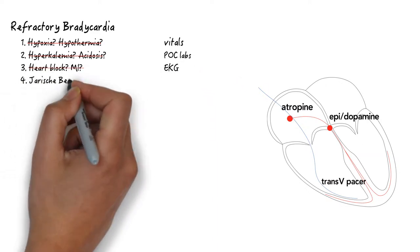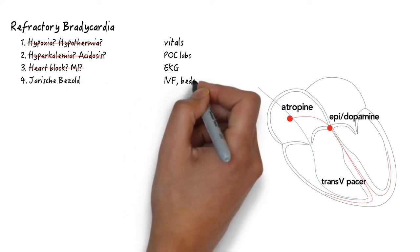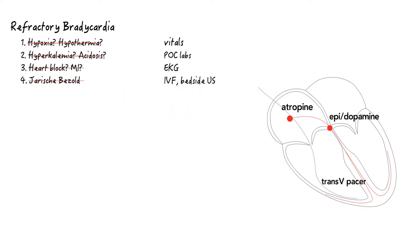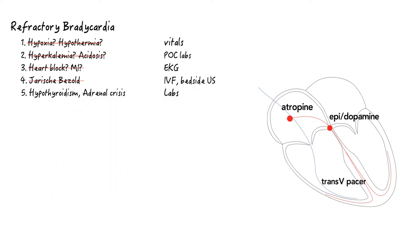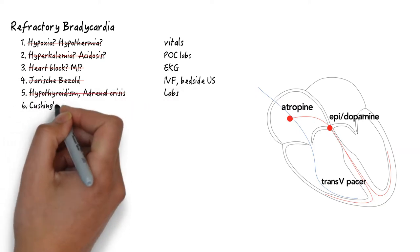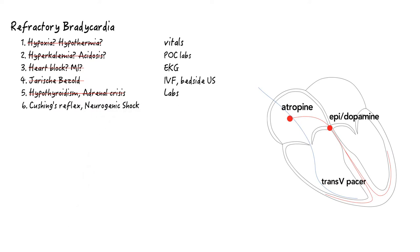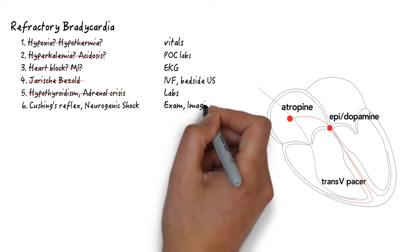If there is a high degree heart block below the AV node, this is a good time to strongly consider transvenous pacing and get set up for this. The Bezold-Jarisch reflex, hypothyroidism, adrenal crisis, Cushing's reflex, neurogenic shock, they will all respond to epinephrine.